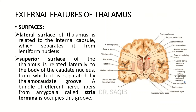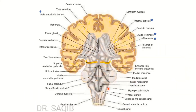A bundle of efferent nerve fibers from the amygdala called the stria terminalis occupies this groove. Here you can see the thalamus, the caudate nucleus, and this is the stria terminalis.